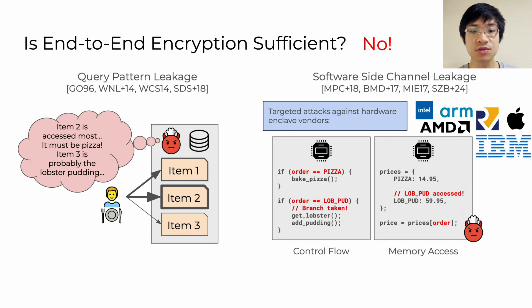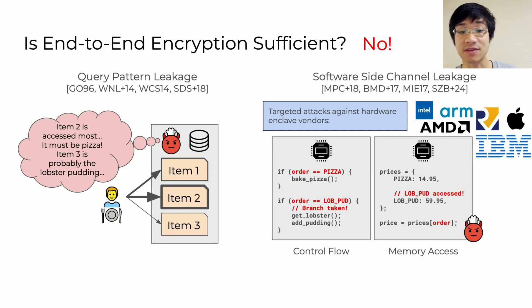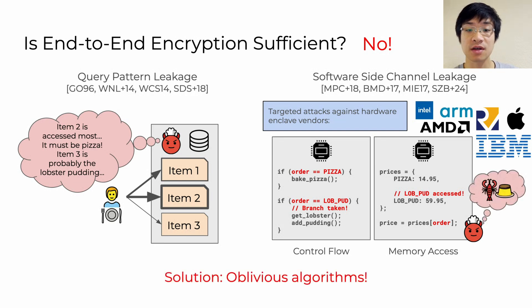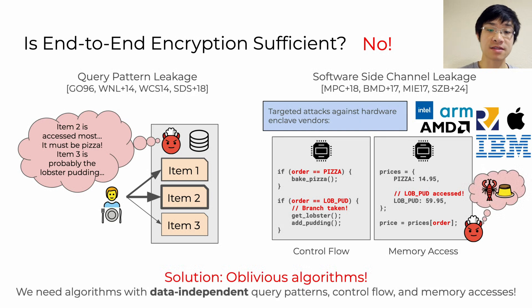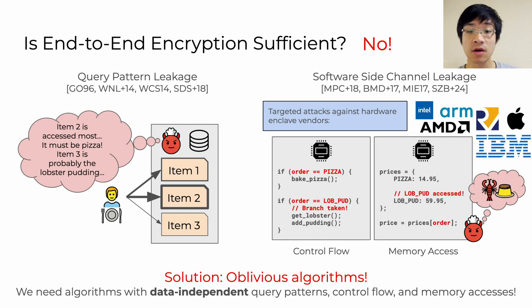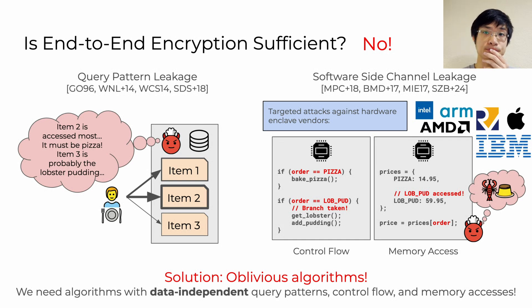The solution to both of these problems is oblivious algorithms. These are algorithms whose query patterns, control flow, and memory accesses are independent from the data that they're computing upon, which mitigates the classes of attacks that we see here.